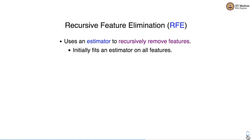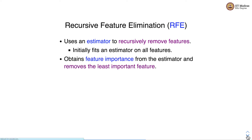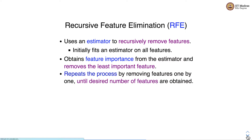The first wrapper-based method is Recursive Feature Elimination, or RFE. RFE uses an estimator to recursively remove features. It initially fits an estimator on all features, then obtains feature importance from the estimator and removes the least important feature. It repeats the process by removing features one by one until the desired number of features are obtained.